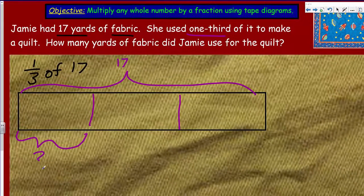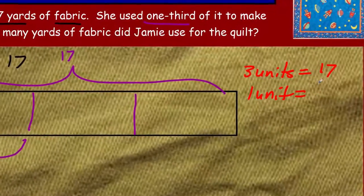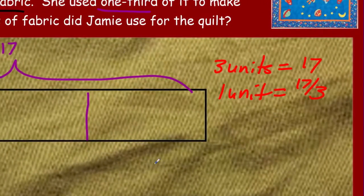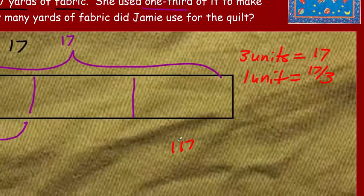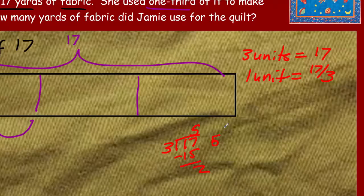We're trying to determine the one third — that's how much she used. So three units equals our 17. One unit equals 17 divided by three. Let's do that division: 17 divided by 3 — three goes into 17 five times, giving 15. We subtract and get 2 left over. So our answer is five and two thirds.